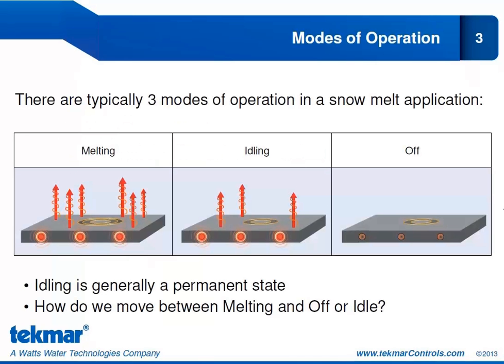The three modes in most snowmelt applications are melting, idling, and off. When we're melting, our slab is at a sufficient temperature to melt any snow that accumulates on it. Idling is a lower temperature so that the slab is ready to jump to a melting state should snow fall. And off means we are not delivering any heat to the slab at all.